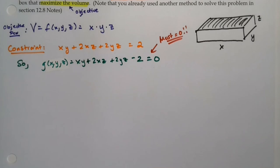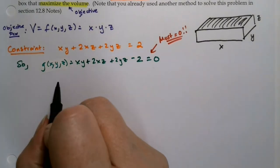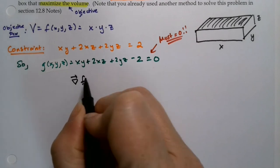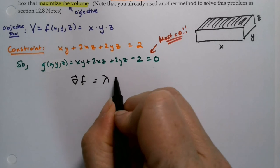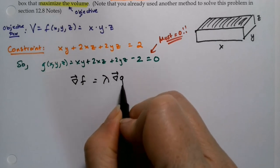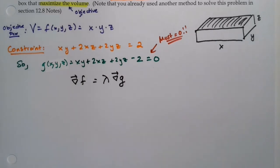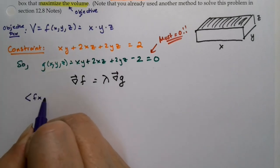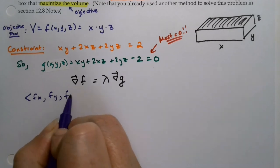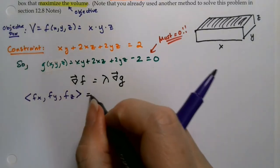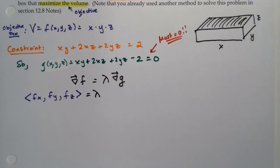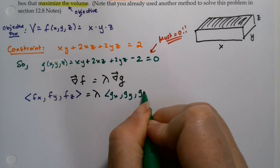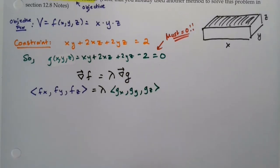Now remember the Lagrange multiplier method. The Lagrange method says the gradient of your objective function is equal to lambda times the gradient of your constraint function. So that means that we're going to have fx, fy, fz is equal to lambda times gx, gy, gz.